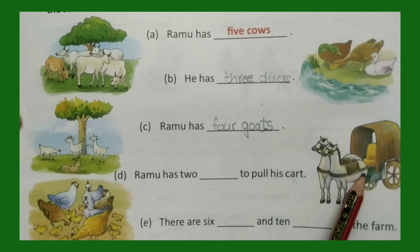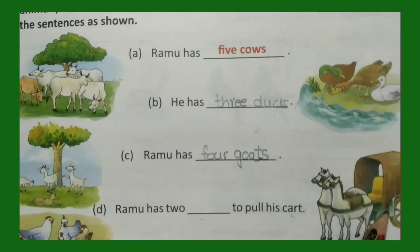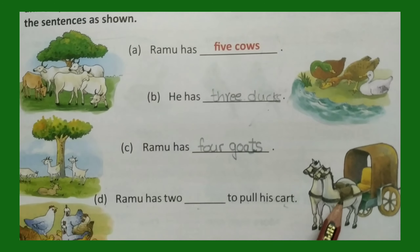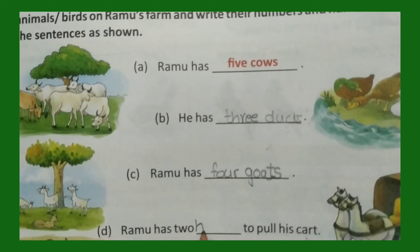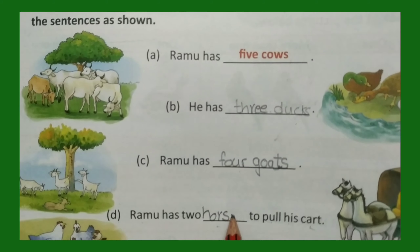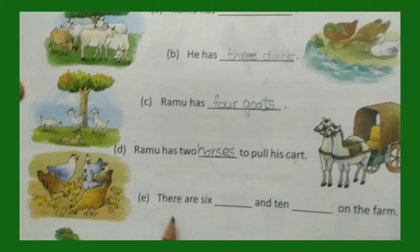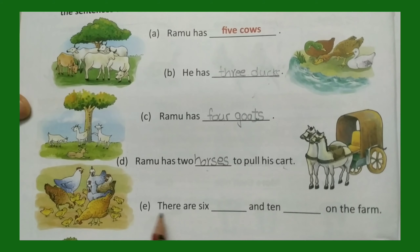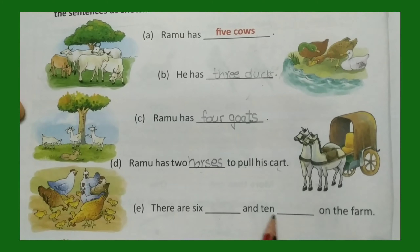These two animals are pulling the cart. What are these? Is it horse or horses? More than one, so we write horses. Next, e: there are six dash and ten dash on the farm.